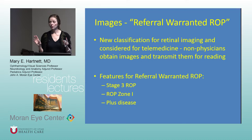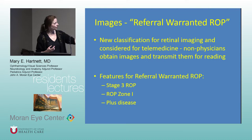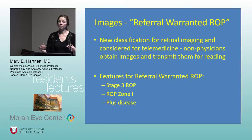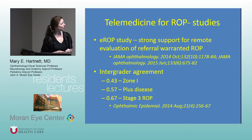A new classification called 'referral-warranted ROP' was developed for situations where, say, a neonatologist or neonatal nurse in rural America is doing imaging and sending images to a reading center. The reading center looks for three characteristics: any stage 3 ROP, any ROP in zone 1, or plus disease. If any of those is present, that baby has referral-warranted ROP and should have an examination. A large study called e-ROP — telemedicine for ROP — provided strong support for remote evaluation, with good interrater agreement for zone 1, plus disease, and stage 3.